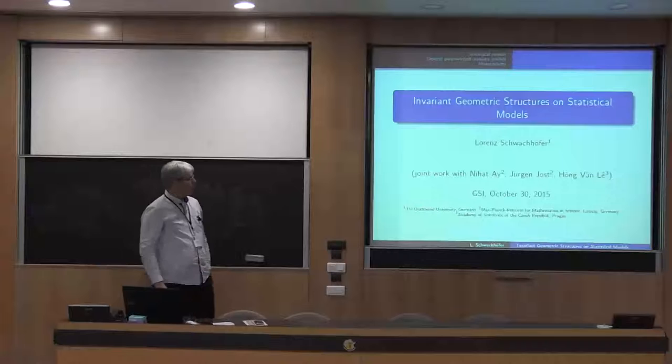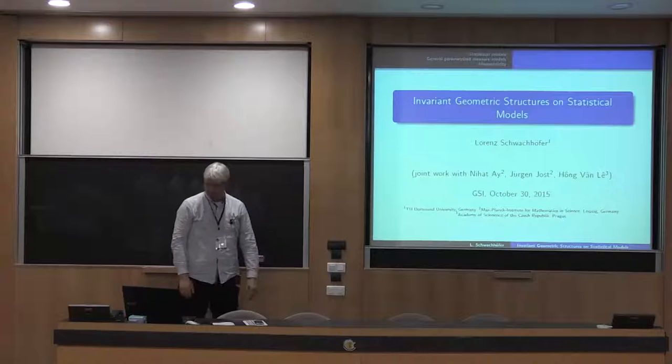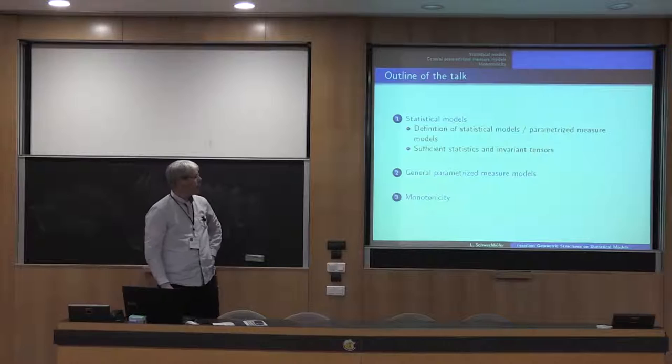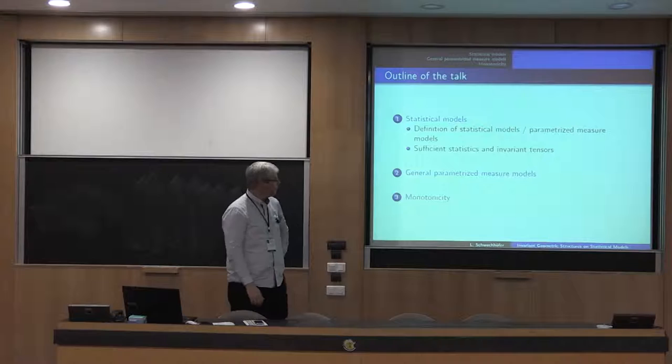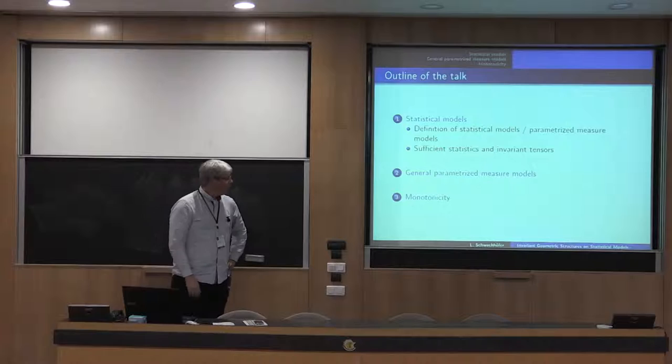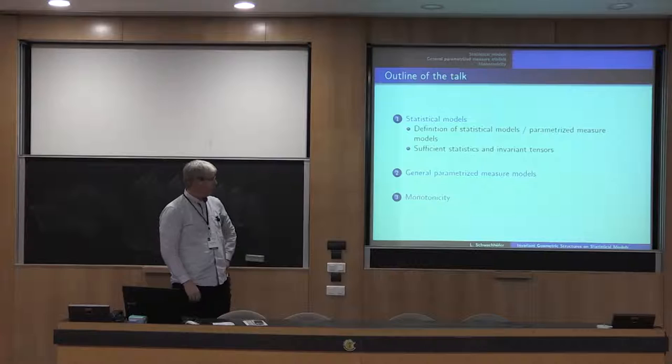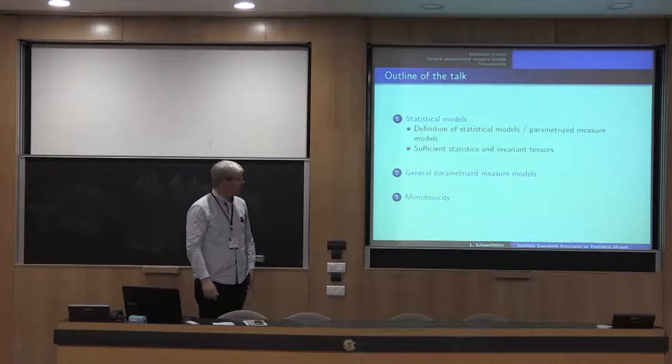This is some joint work with Nia 3, Jürgen Joost and Hong Kong Lee on invariant geometric structures. There are basically three parts: the first on statistical models and invariant structures, sufficient statistics and invariant tensors; the second on some generalization of the notion of parameterized measure models; and the third on monogenicity, which is the application of the second part.